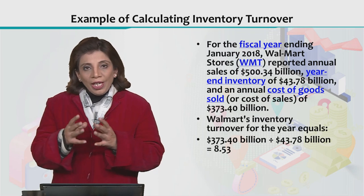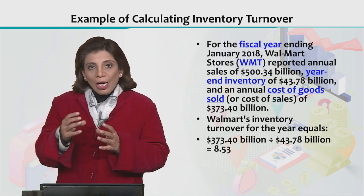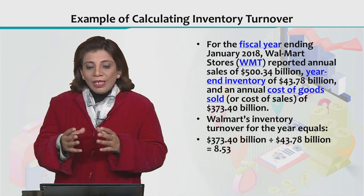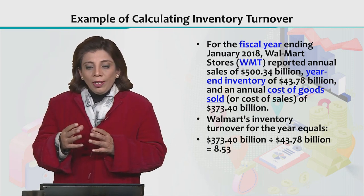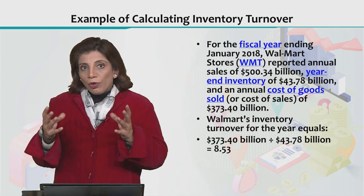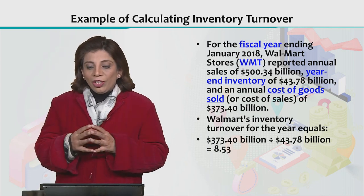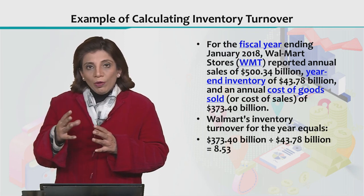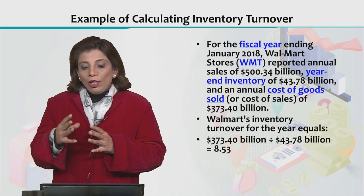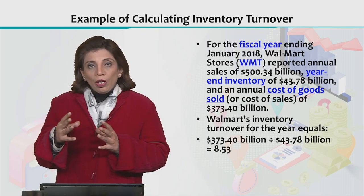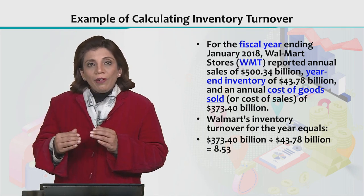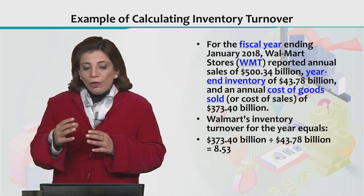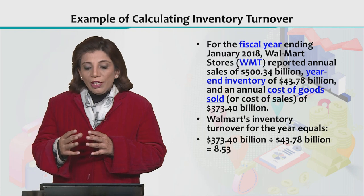I have taken a real-life example to understand how we interpret the inventory turnover ratio. In January 2018, Walmart reported their annual sales report showing that their total annual sales value is $500.34 billion, they have a year-end inventory of $43.78 billion, and the cost of goods sold is $373.40 billion.